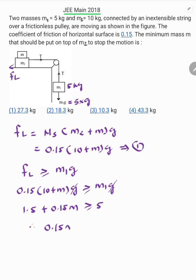So 0.15M is equal or greater than 5 minus 1.5, that is 3.5. So M is equal or greater than 3.5 upon 0.15. By simplification, M is equal or greater than 23.3 kg.